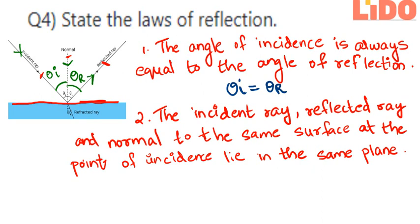So these are the laws of reflection. Now let's summarize once again. The laws of reflection are: first, the angle of incidence is always equal to the angle of reflection. Second, the incident ray, reflected ray, and normal to the same surface at the point of incidence lie in the same plane. I hope you have understood the solution. If you have any doubts or queries, please comment below. If you like this video, give it a big thumbs up, and for further such videos, please subscribe to this channel. Thank you all.